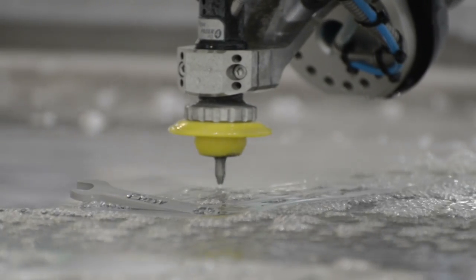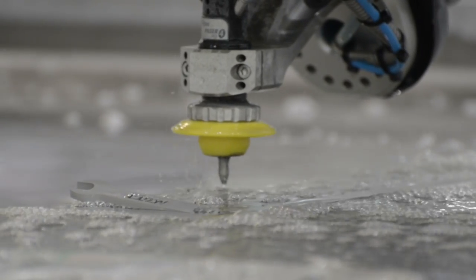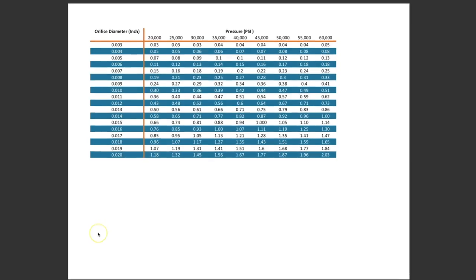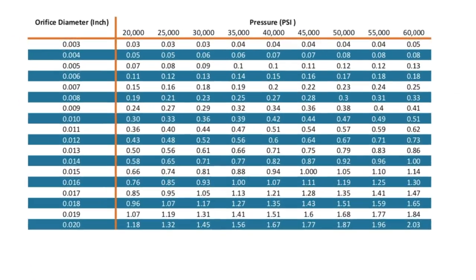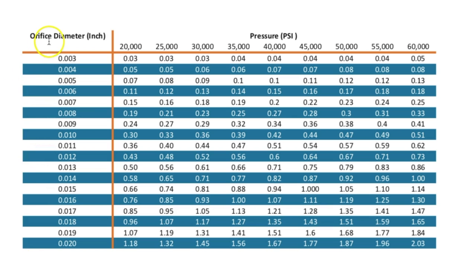One of the reasons this is important is that we are now going to review an orifice chart. On this chart the horizontal axis shows different pressure ratings, and the vertical axis shows the orifice size. For every orifice size at a given pressure, a given amount of water is required.